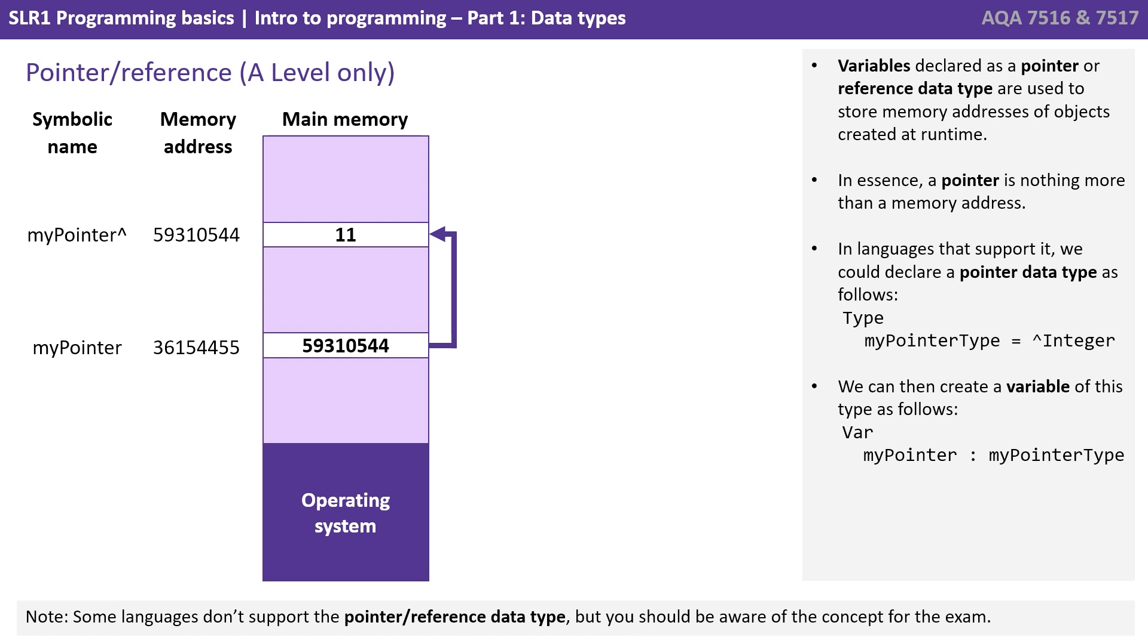And finally, let's go over the pointer or reference data type. Now this is only covered in the A level, so if you're doing the AS part of the course, you don't need to know about this one. So variables declared as a pointer or reference data type are used to store memory addresses of objects created at runtime. In essence, a pointer is nothing more than a memory address. In languages that support it, we could declare a pointer data type as follows. My pointer type equals and then the data type. We can then create a variable of this type as shown. Now again, some languages don't support the pointer or reference data type, but it is something you need to be aware of and a concept which could come up in the exam.